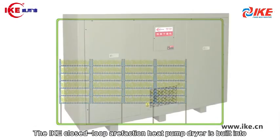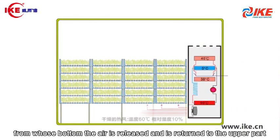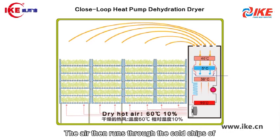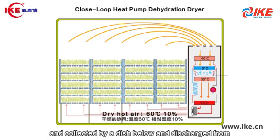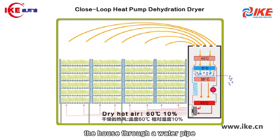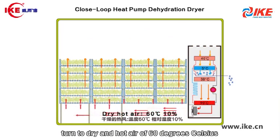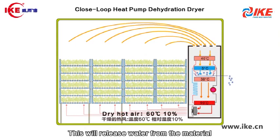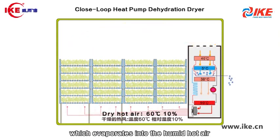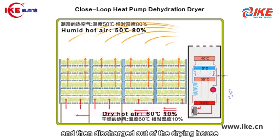The IKE closed-loop air-faction heat pump dryer is built into the sealed and heat-preserved drying house, from whose bottom the air is released and returned to the upper part. The air then runs through cold chips of 5 degrees Celsius to get cooler. The moisture in the air will be condensed into drops of water, collected by a dish below, and discharged from the house through a water pipe. After dehydration, the air will run through hot chips of 90 degrees Celsius, turn to dry and hot air of 60 degrees Celsius, and penetrate through the material, heating it up. This will release water from the material, which evaporates into the humid hot air. Eventually, the steam will be condensed onto the cold chips of 5 degrees Celsius and then discharged out of the drying house.